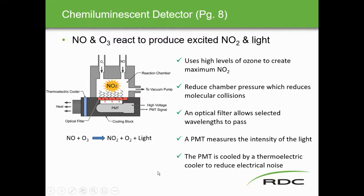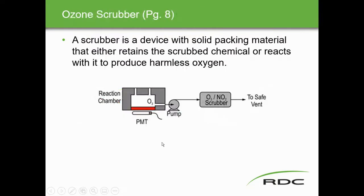The photomultiplying tube is cooled by a thermoelectric cooler to reduce electrical noise. A scrubber is a device with solid packing material that either retains the scrubbed chemicals or reacts with them to produce harmless oxygen. The surplus O3 gets pumped out and scrubbed so that only safe oxygen is vented. The NO2 is also scrubbed before venting.